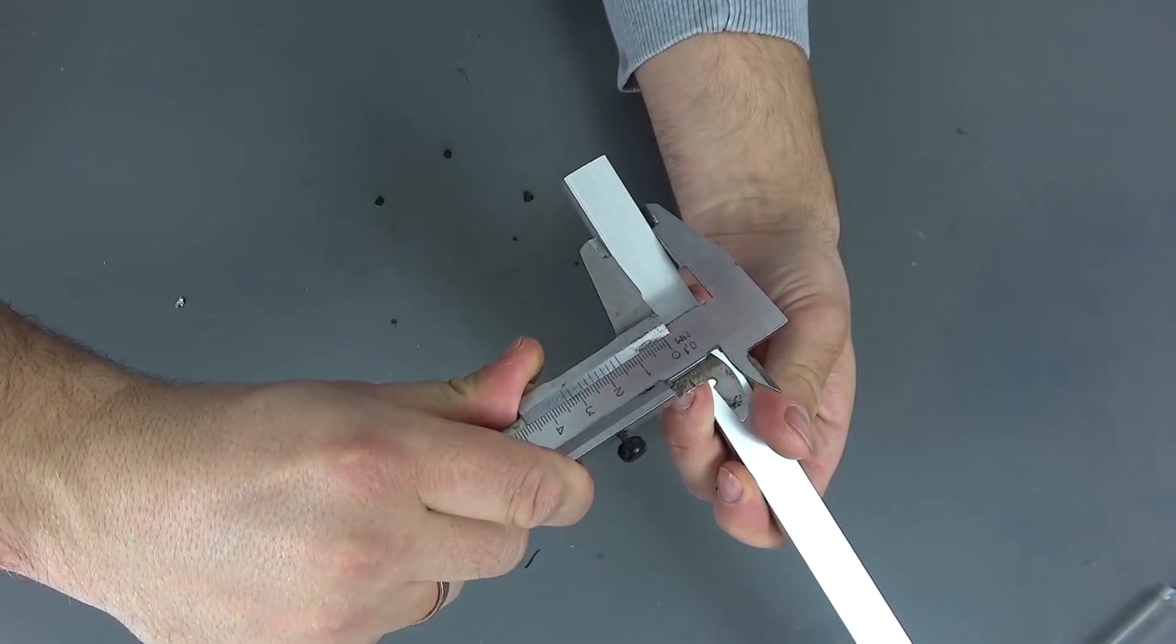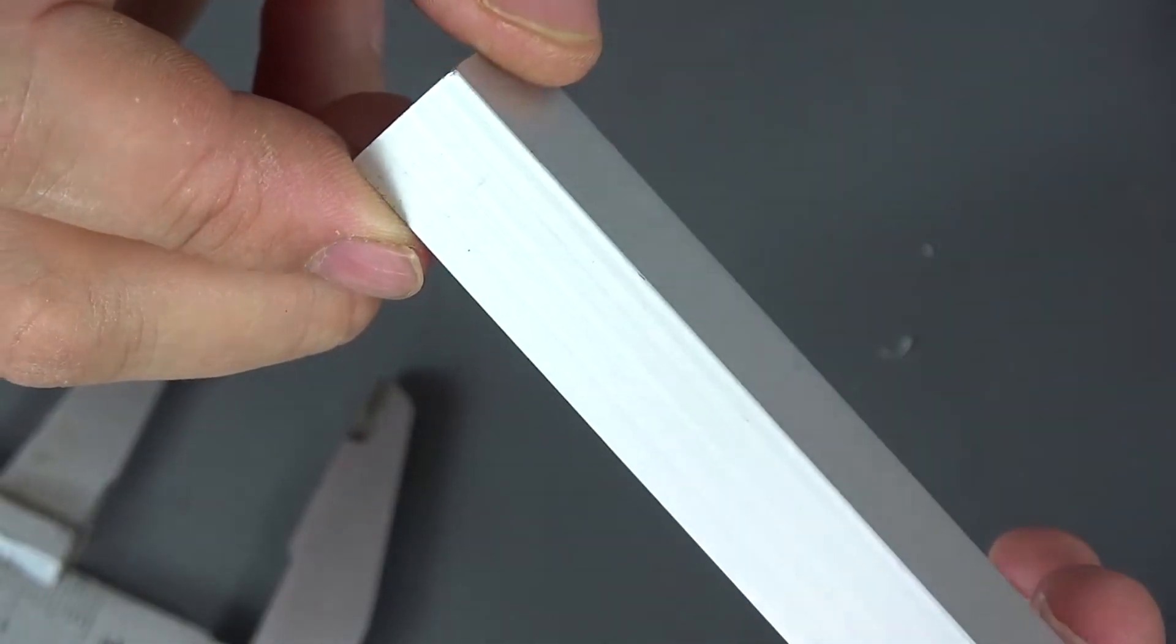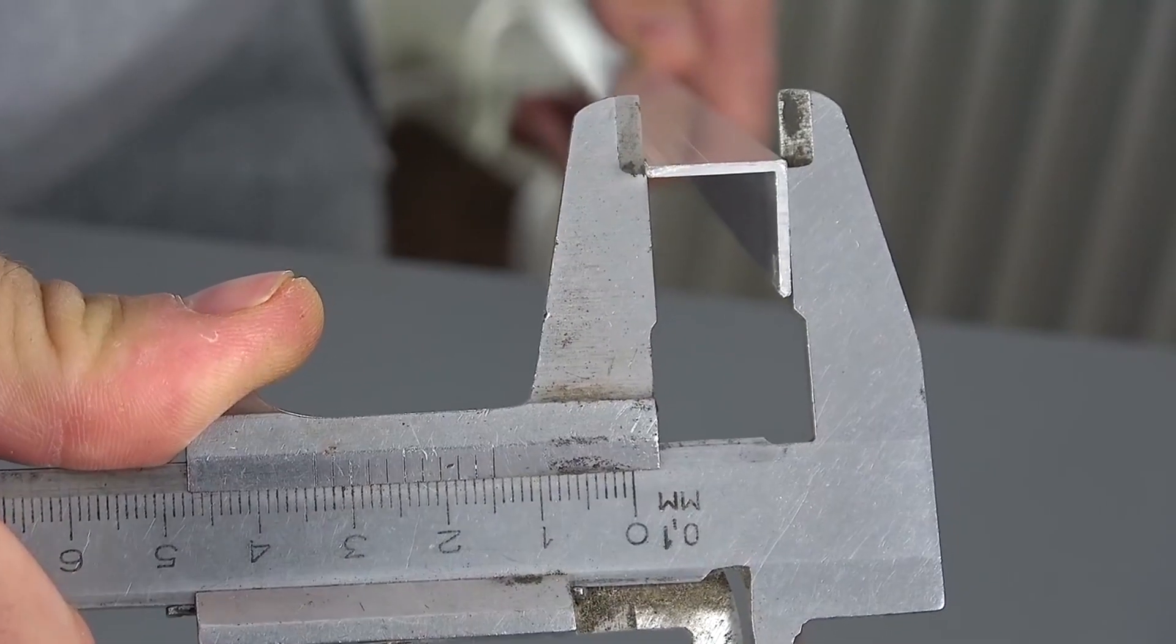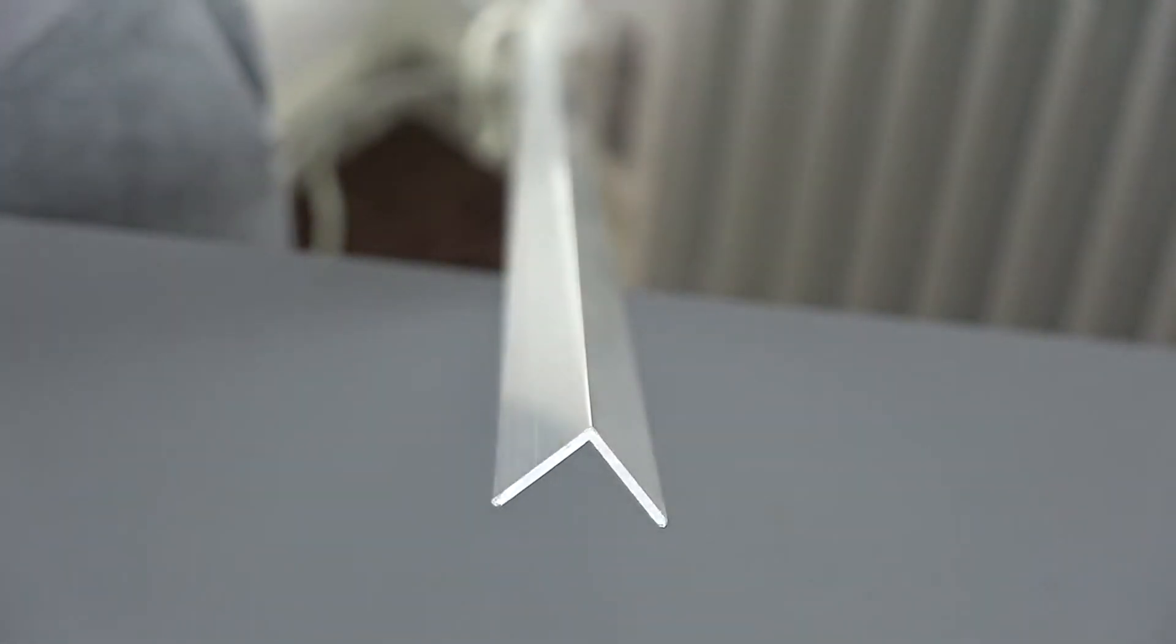Such profiles are sold in construction stores, but do not look for it in the departments with profiles and sheet metals. Immediately go to the place where you can buy abutment thresholds and profiles for tile masters.